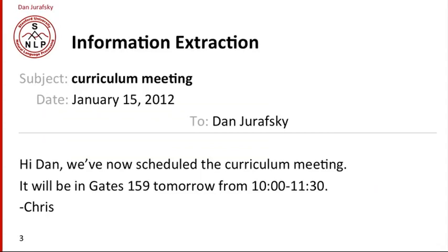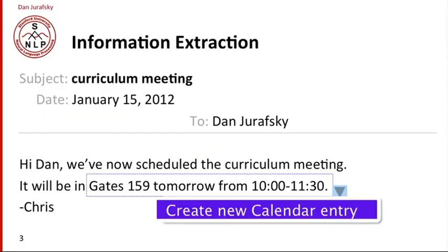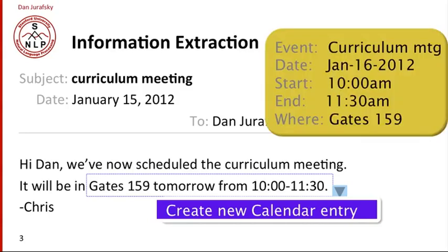Another important task is information extraction. For example, imagine that I have the following email from my colleague Chris about scheduling a meeting. We'd like software to automatically notice that there are dates like tomorrow, times like 10 to 11:30, and a room like Gates 159. Extract that information, create a new calendar entry, and populate a calendar with this structured information — the event, date, start and end time. Modern email and calendar programs are capable of doing this from text.